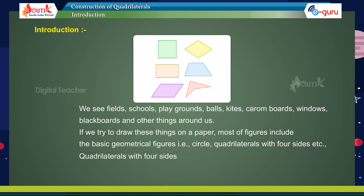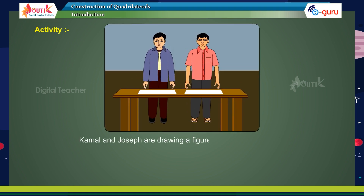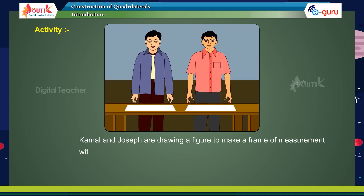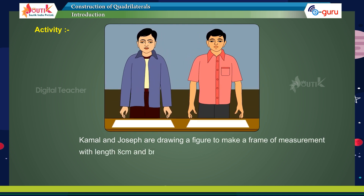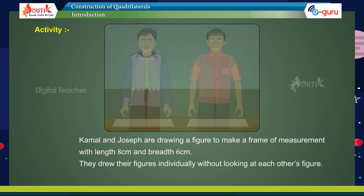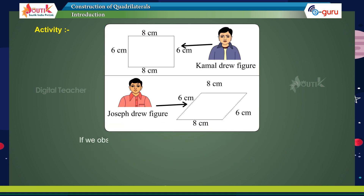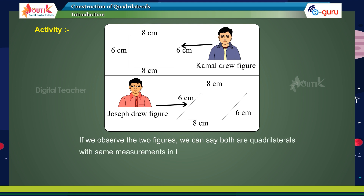Quadrilaterals with four sides have different lengths, so the shapes are also varied because of lengths. Activity: Kamal and Joseph are drawing a figure to make a frame of measurement with length 8 cm and breadth 6 cm. They drew their figures individually without looking at each other's figure. We can see both are quadrilaterals with the same measurements in length and breadth, but the figures are different.